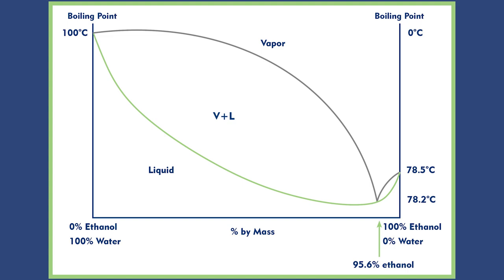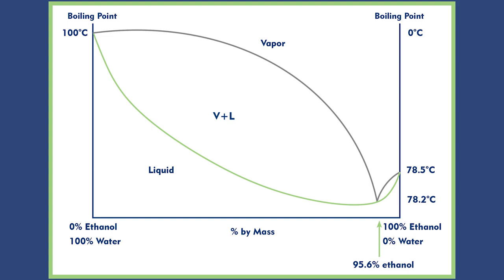This is where azeotropes come in. You see that spot right around 95% where the lines touch? Well, that's the azeotrope of the mixture. At that particular composition, the vapor and the liquid have the exact same composition. This means that we cannot separate the compounds with simple distillation.